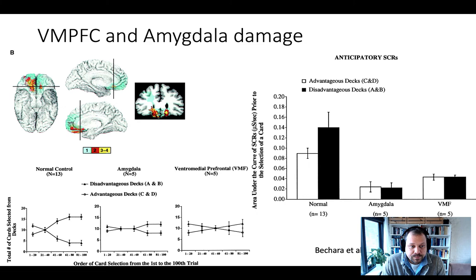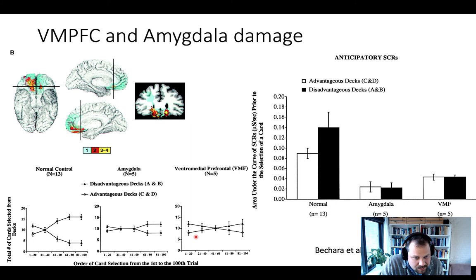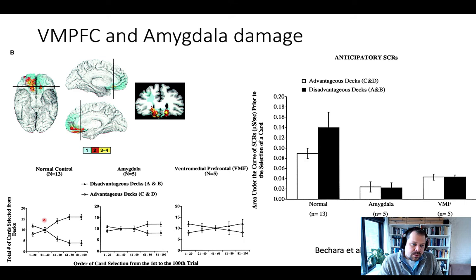These graphs show how the participants performed. Normal controls pick up that some decks are disadvantageous and stop choosing cards from them, while picking more and more from good decks. This is not the case for amygdala patients. VMPFC patients seem to somewhat distinguish toward the end, but healthy controls overall behave advantageously whereas amygdala patients do not.